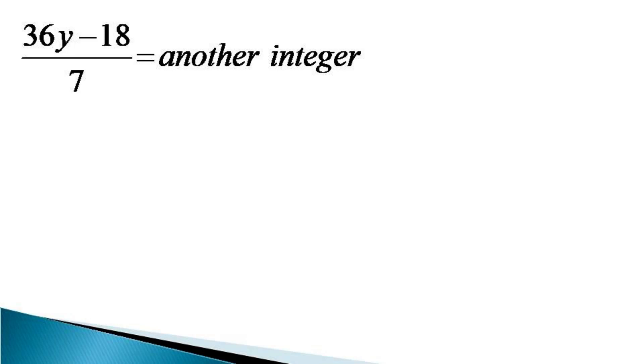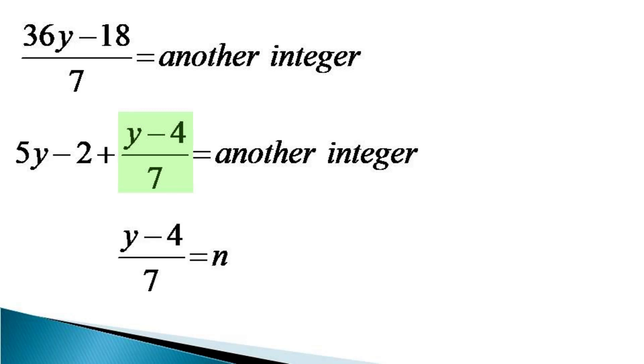Now we separate the whole parts from the fractional part. The whole part comes as 5y - 2 + (y - 4)/7 = another integer. So y being a positive integer, 5y - 2 is also an integer, and (y - 4)/7 should be an integer. We now give an algebraic value to the fraction (y - 4)/7, which equals n. n can be any integer.